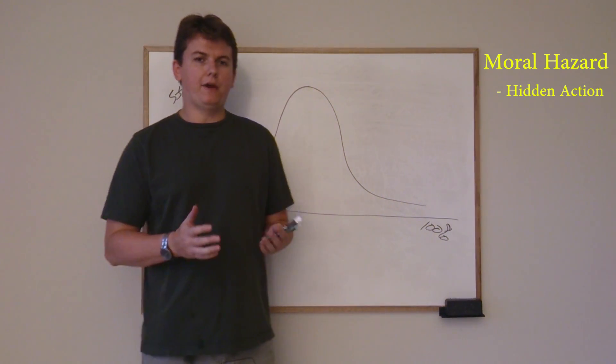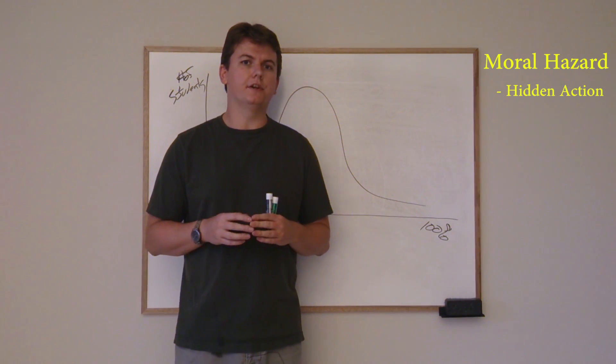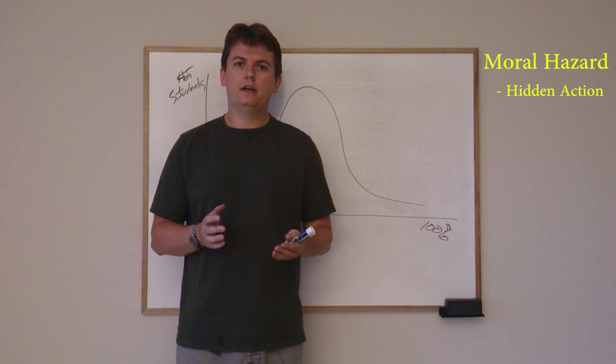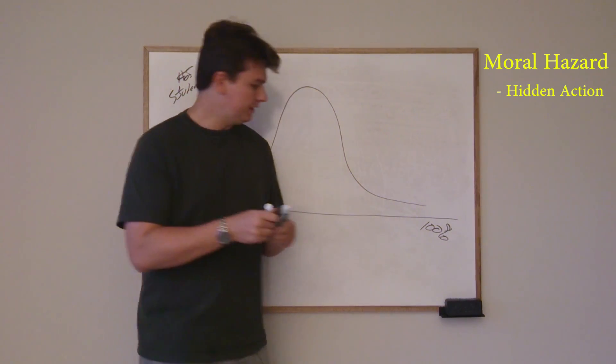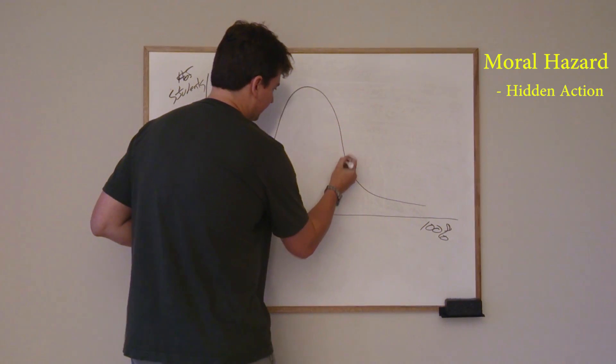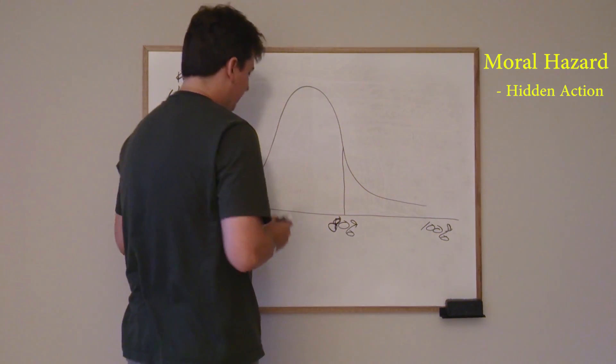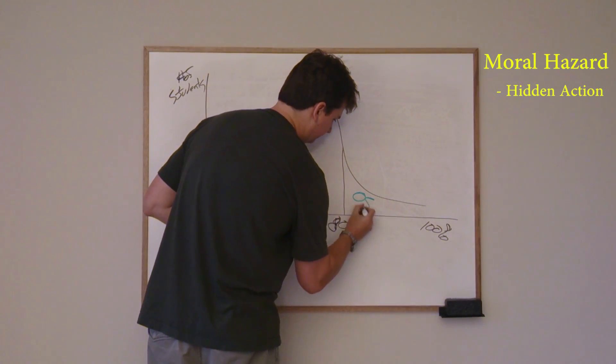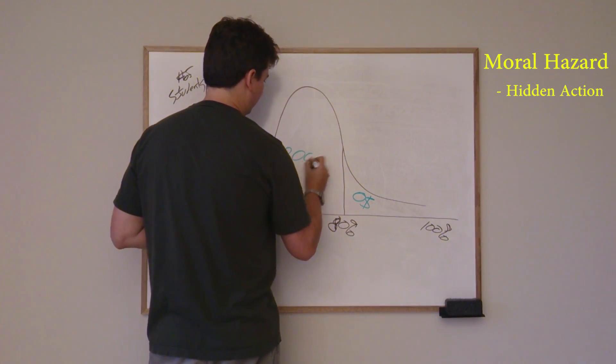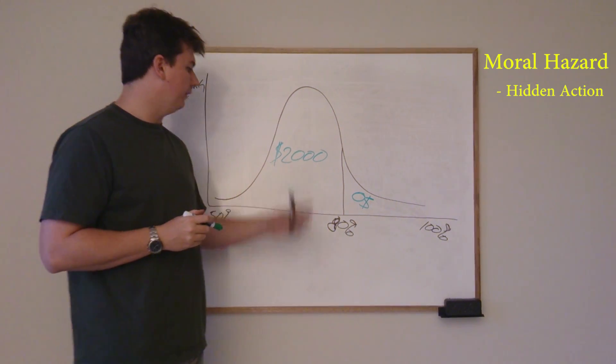So if I walk into an undergrad class and I say, okay, I'm going to offer you bad grade insurance. So anyone that gets less than 80%, I will give $2,000 to as long as you buy my insurance. So basically what you're looking at here is let's say 80% is good enough, 80% is right here. Just 80%. So anybody that is above this gets a $0 payout and anyone gets a $2,000 payout over here.